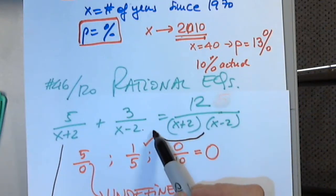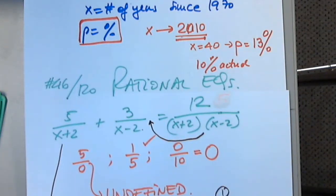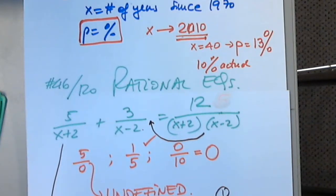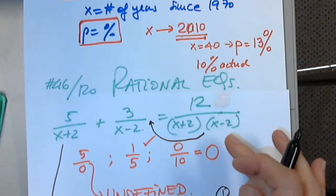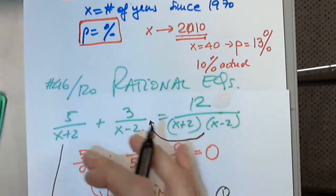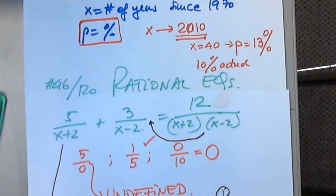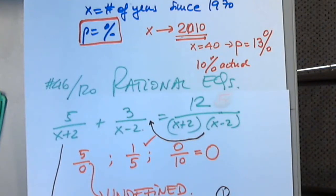My first step is to write the restrictions. My second step: I prefer moving the term to the other side, rewriting the equation as 5 over (x plus 2) plus 3 over (x minus 2) minus 12 over (x plus 2)(x minus 2) equals 0.